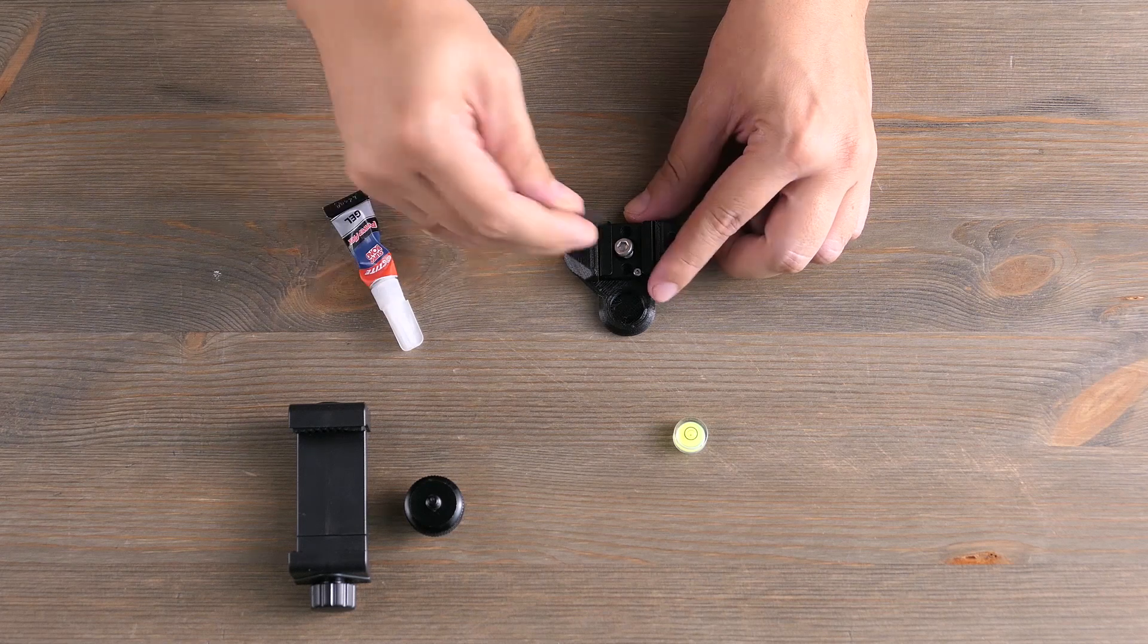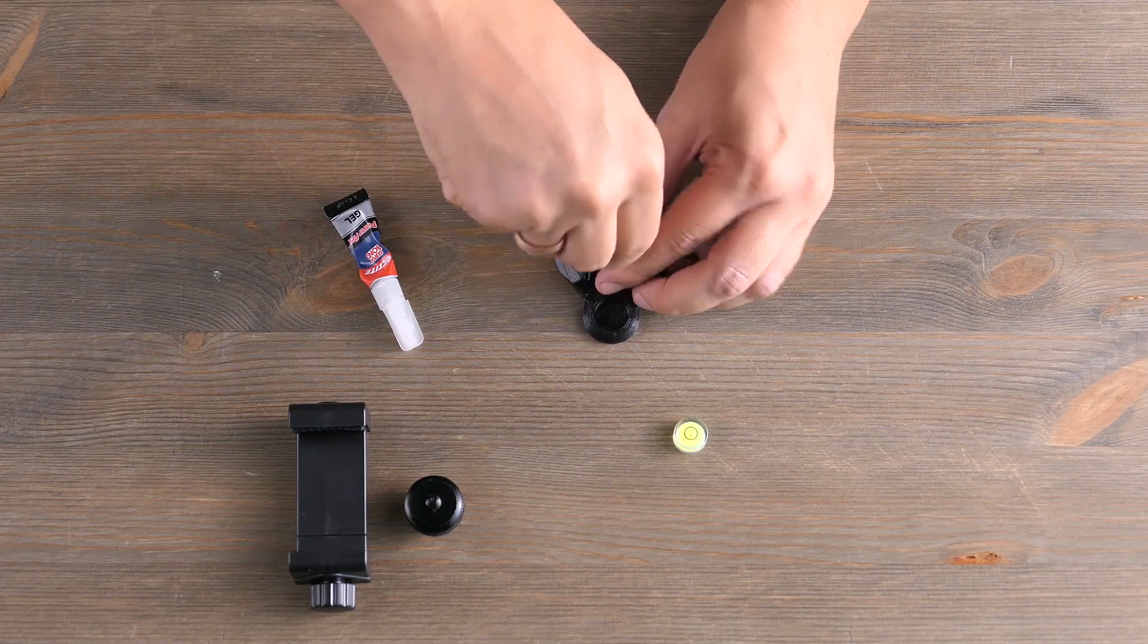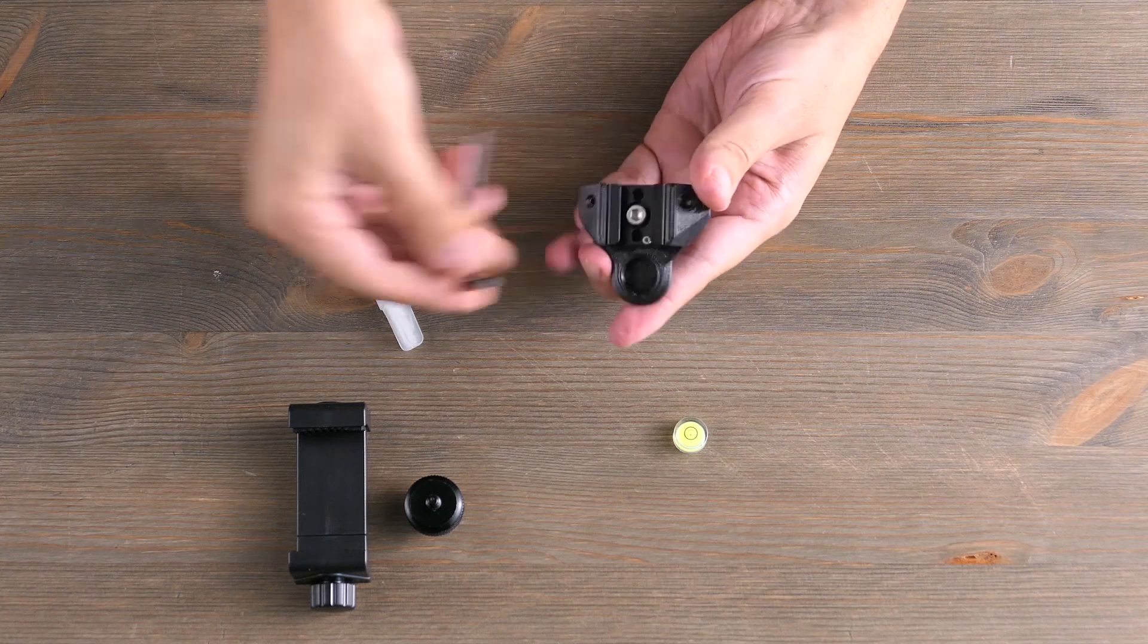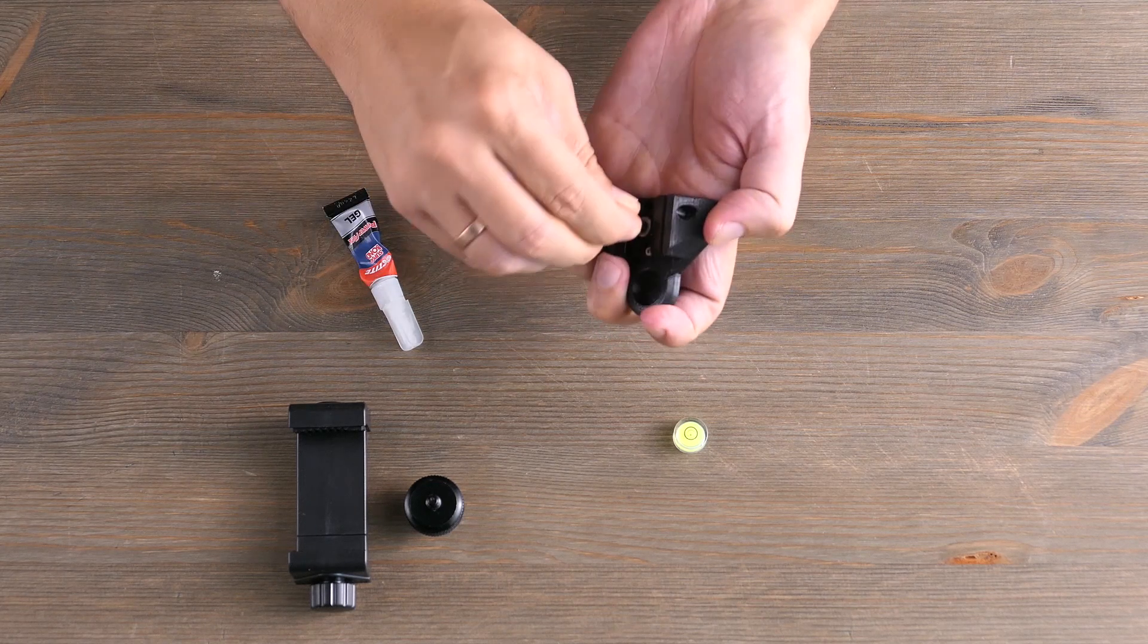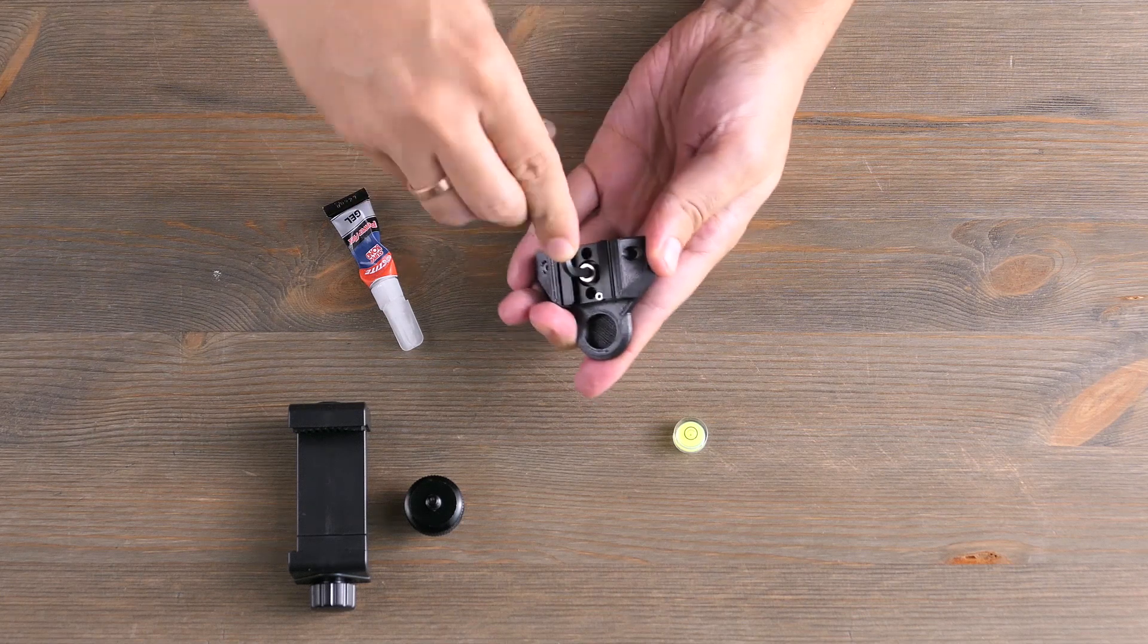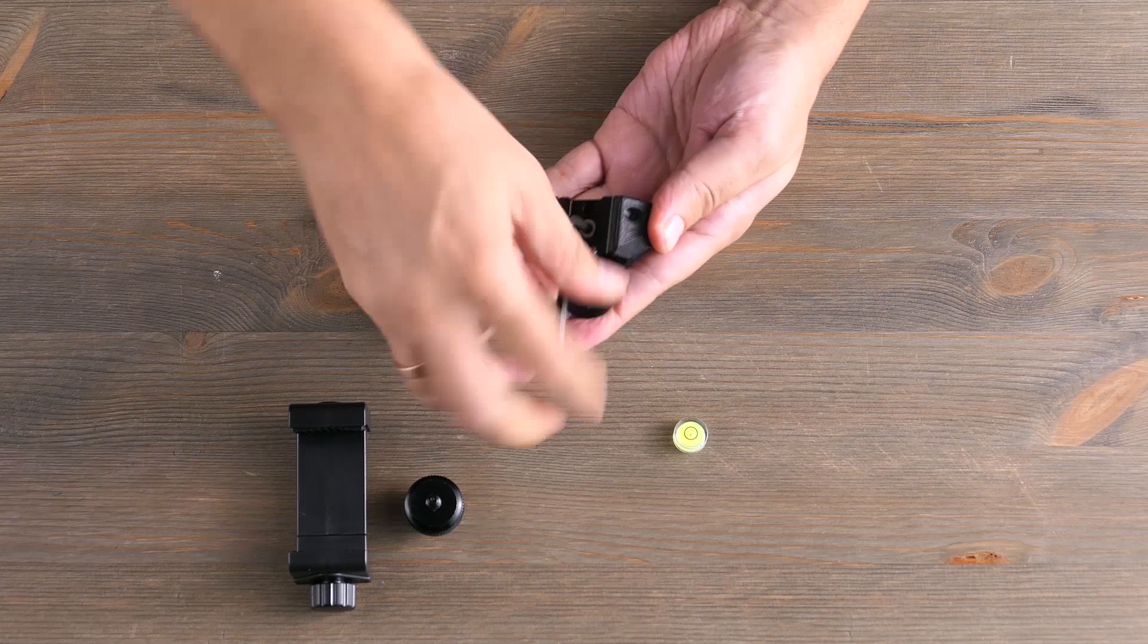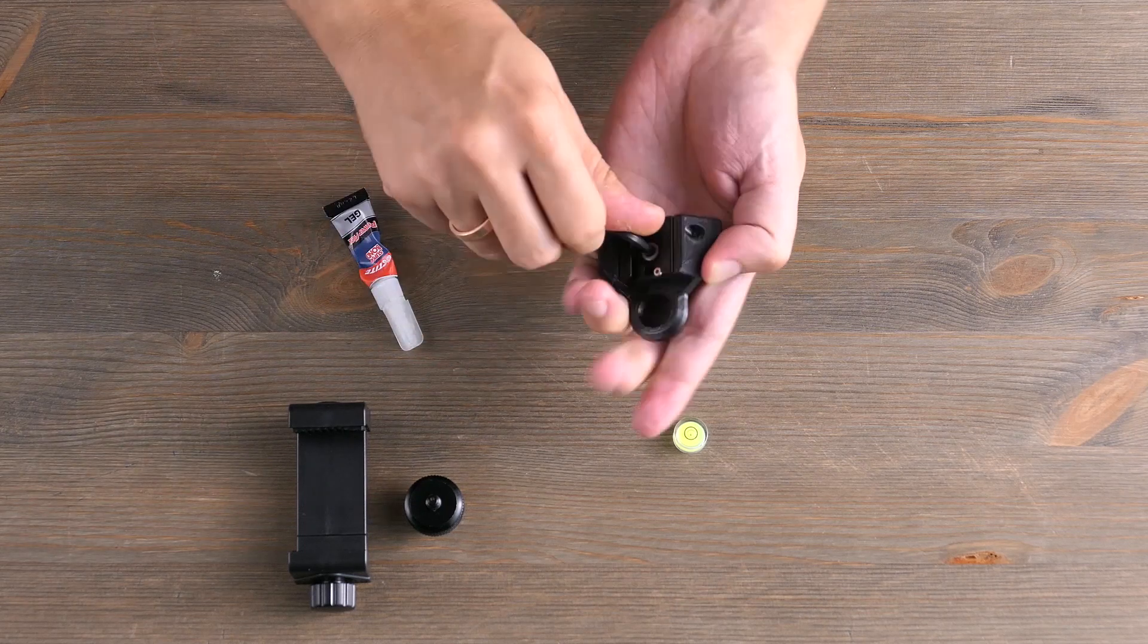This screw needs an allen wrench but it varies depending on the package. Tighten the screw but don't overdo it otherwise you'll damage the 3D printed piece.